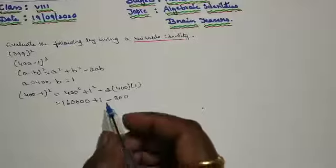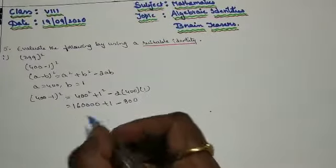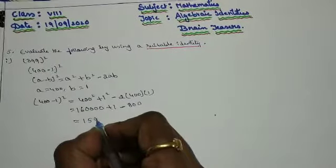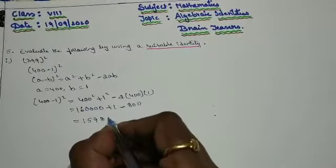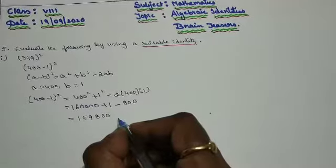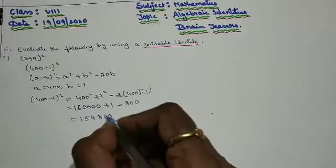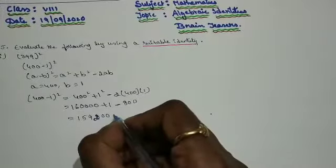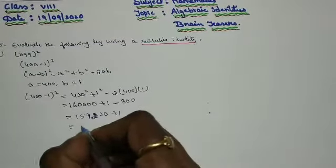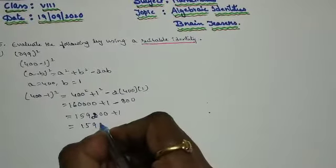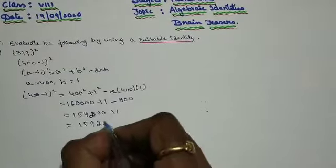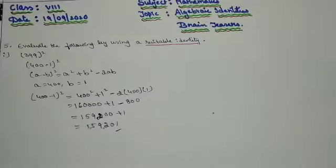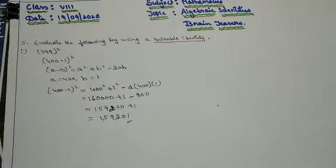Now simplify this. 400 square is nothing but 160000, plus 1 minus 800. Now simplify: 160000 minus 800 gives 159200. Sorry, not 8 — it is 2 because 10 minus 8 is 2. Plus 1. Then the final answer is 159201.